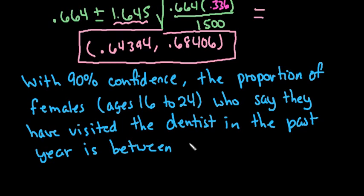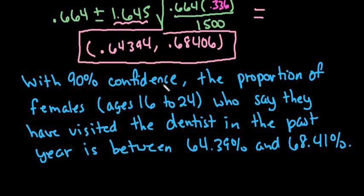Is between these two values. So we would say 64.39 percent and 68.41 percent. With 90 confidence the proportion of females ages 16 to 24 who say that they have visited the dentist in the past year is between 64.39 and 68.41.